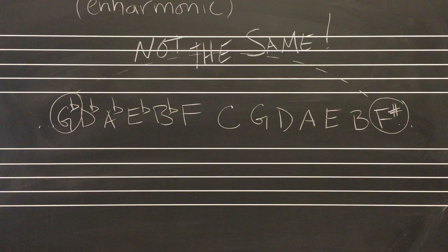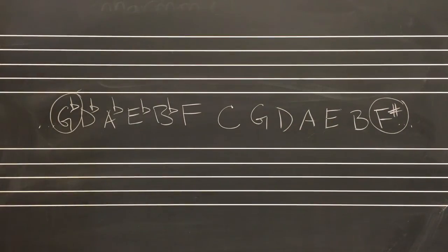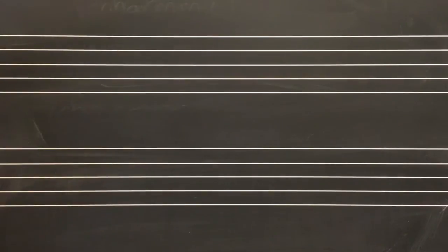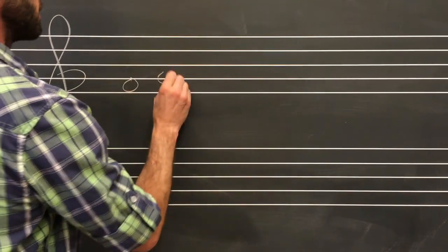This is where many novice musicians wrap the circle of fifths around and reattach the series into a neat and orderly circle, but beware, F-sharp and G-flat are not the same. They are spelled differently for a good reason that will be clear in advanced study.